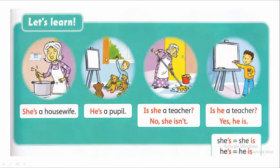Okay, so now let's start. Let's read the first sentence: She is a housewife. Look at the picture — she is cooking. She is a housewife. Next picture: He is a pupil. He is a pupil.